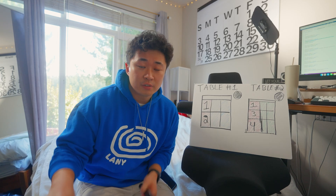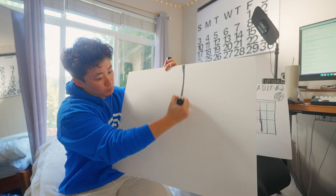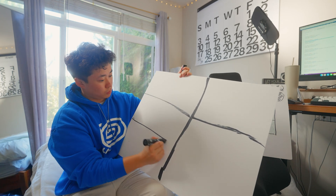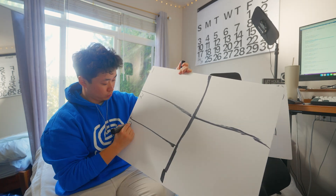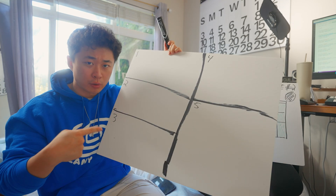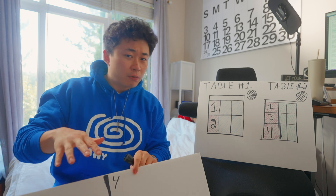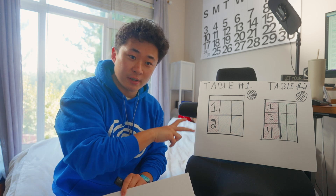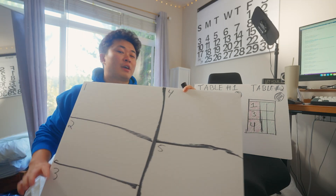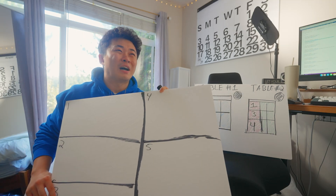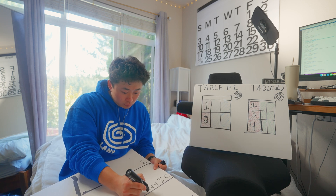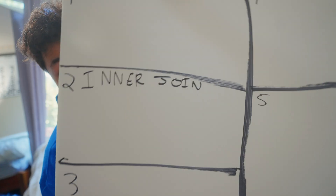In SQL, there are five joins — five different ways to connect two tables together. We're going to start first with my favorite and the most common join that I've seen: the inner join.